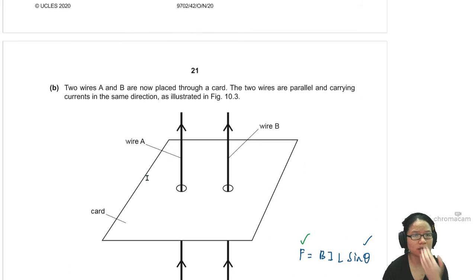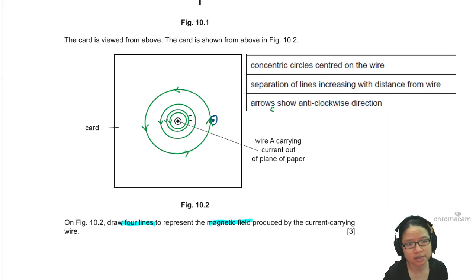The reason why it has increasing separation, addressing a question from the chat, is that it is stronger when it's closer to the wire. The field here is stronger than the field here. So closer separation, closer lines, strong magnetic flux density. Further lines, weak magnetic flux density.